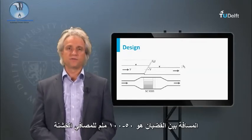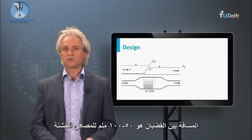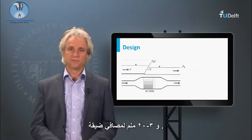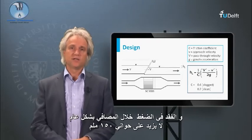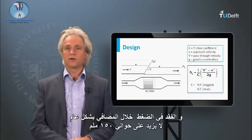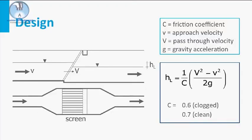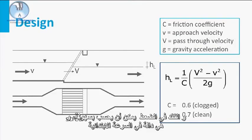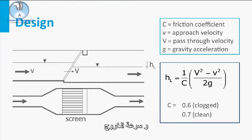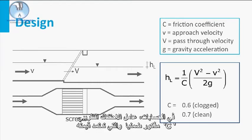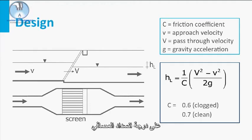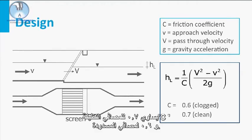The opening between the bars is 50 to 100 mm for coarse screening and 3 to 20 mm for fine screening. The head loss through the screen is generally limited to about 150 mm. A higher head loss may result in pass-through of solids or even overflooding of the treatment plant. The head loss can be easily calculated and is a function of the lateral approach velocity and the pass-through velocity. The appearing friction factor C depends on the degree of clogging: C equals 0.7 for a clean screen and 0.6 for a clogged screen.